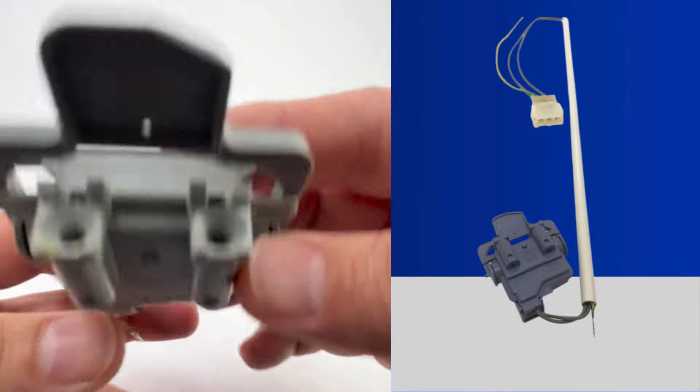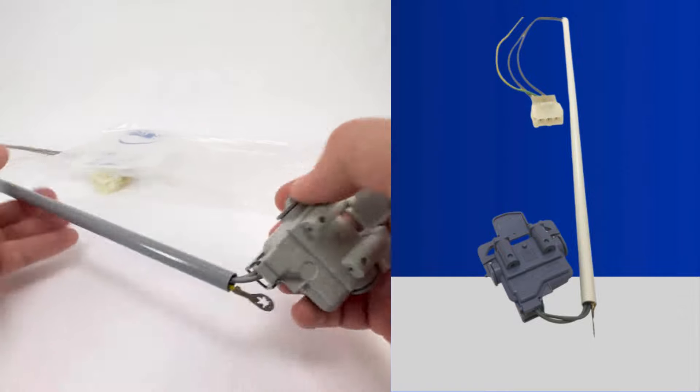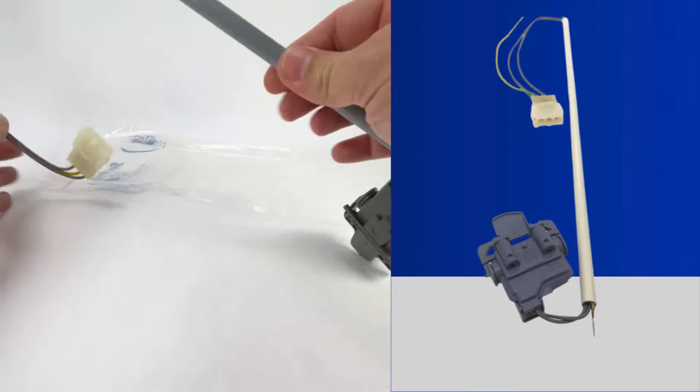Get your Appli Parts 3949247 washer lid switch today and get your washing machine back in top shape.